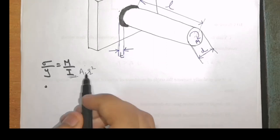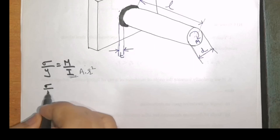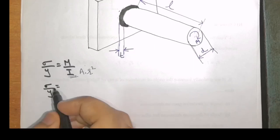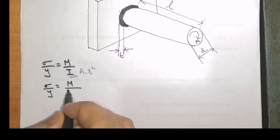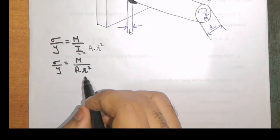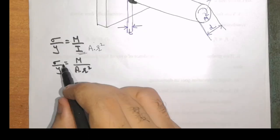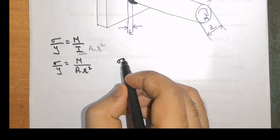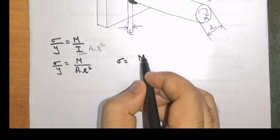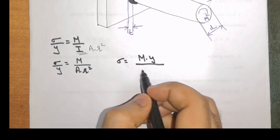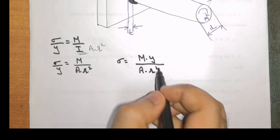Replacing I by A R square, I will get sigma by y is equal to M divided by A into R square. Writing this equation in terms of bending stress sigma, I will get sigma is equal to M into y divided by A multiplied by R square.